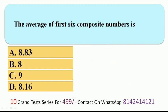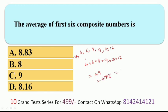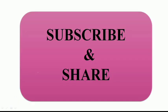Next question: the average of the first six composite numbers. The first six composite numbers are 4, 6, 8, 9, 10, 12. Their sum = 4 + 6 + 8 + 9 + 10 + 12 = 49. Average = 49 / 6 = 8.16. So 8.16 is the right answer. Please subscribe and share the video, thanks for watching.